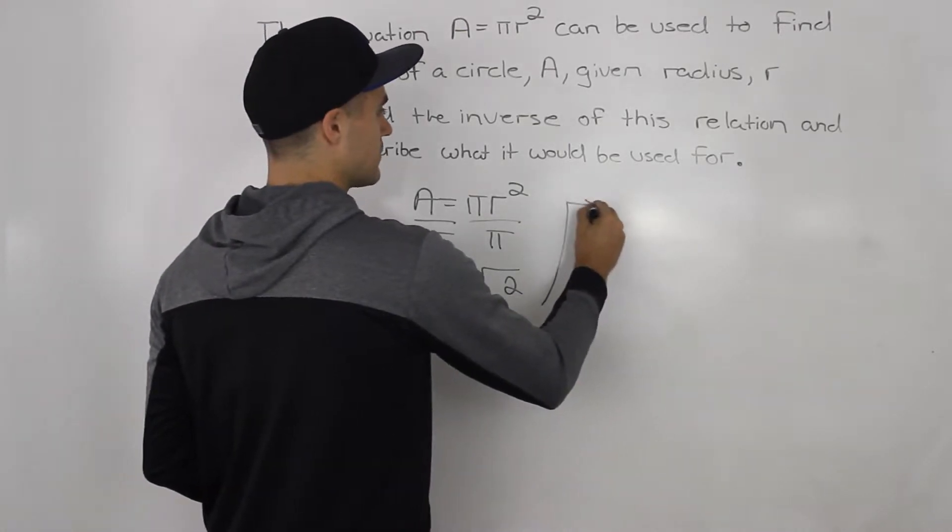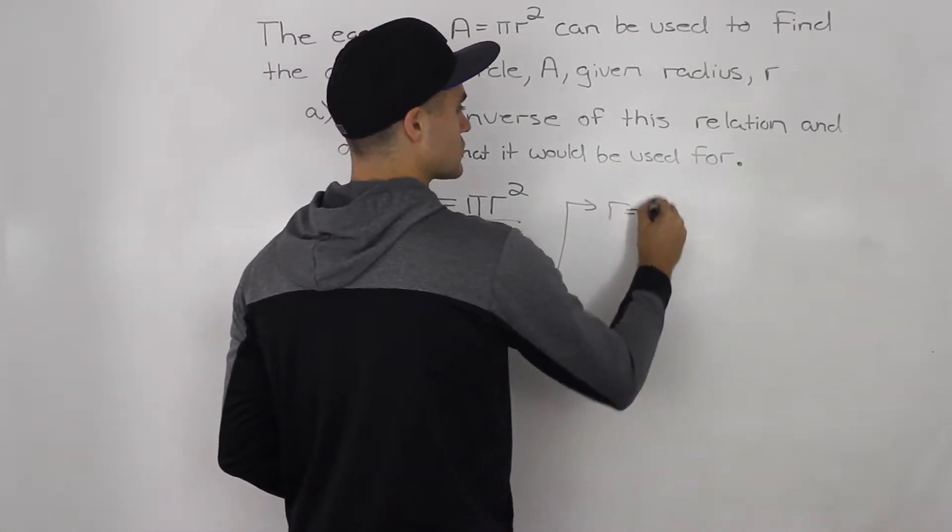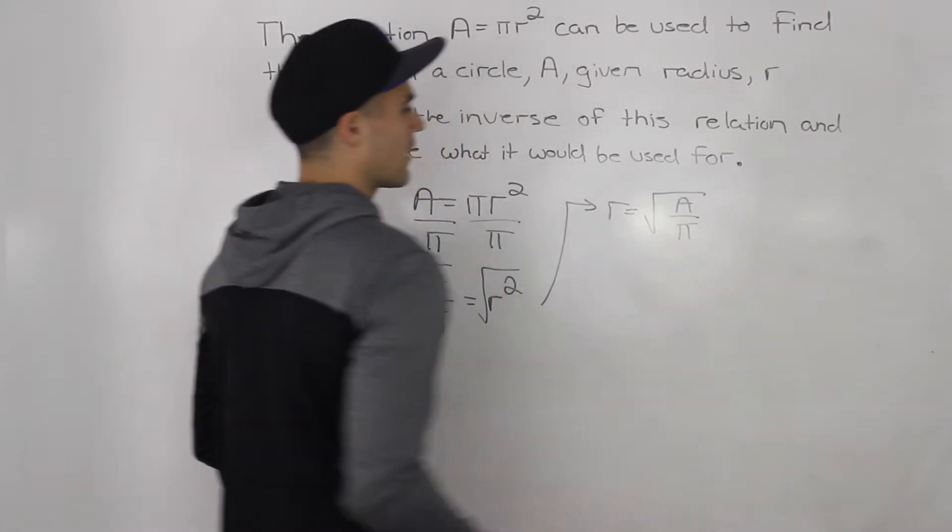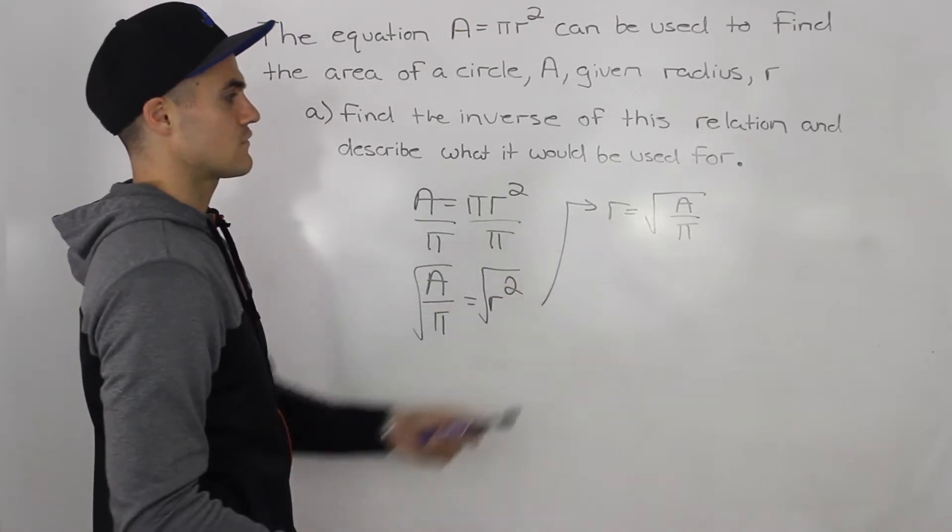So we would end up getting the radius is equal to the square root of the area over π. And that is the inverse.